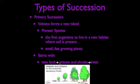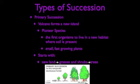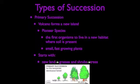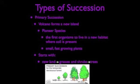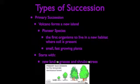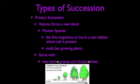Primary succession is when a volcano forms a new island — that would be an example. It consists of pioneer species, which are the first organisms to live in a new habitat where soil is present. They are small, fast-growing plants. Primary succession starts with new land, then leads to grasses and shrubs, and eventually trees — though it takes quite a while to get there.